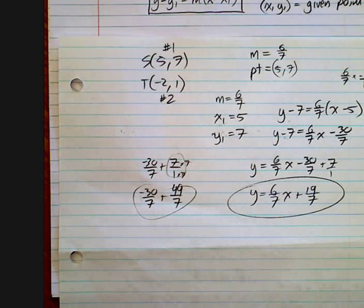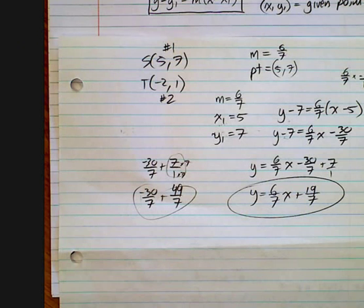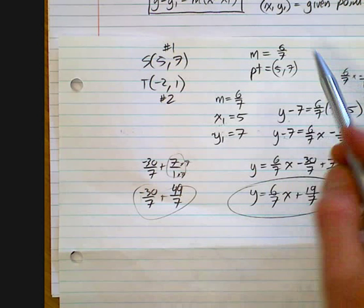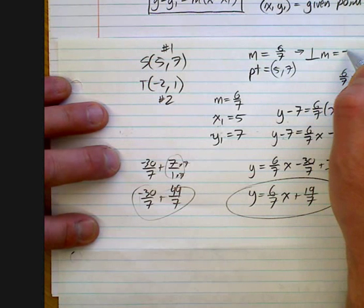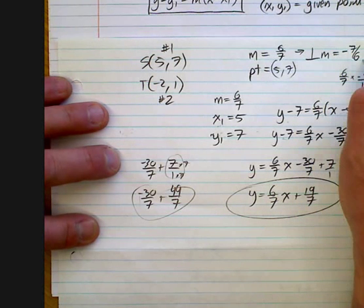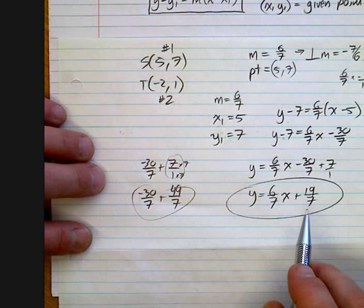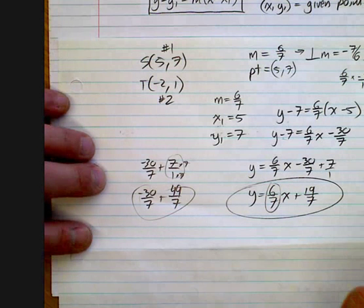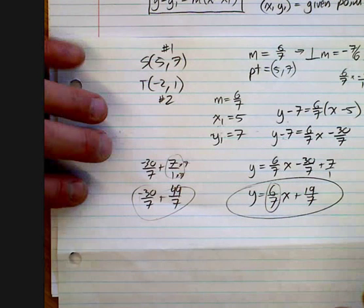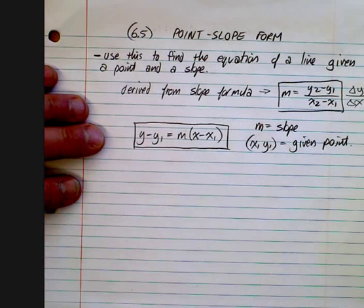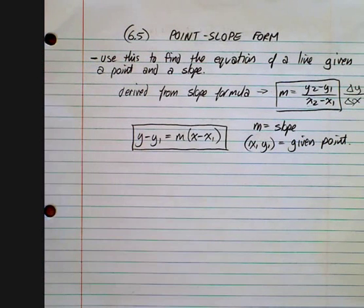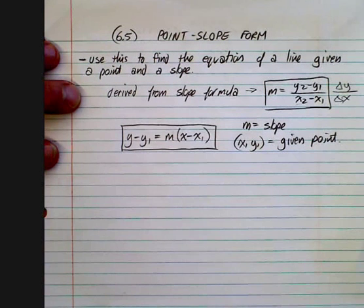Alrighty. Lots of different ways. We can't forget perpendicular lines and parallel lines. If I wanted a line perpendicular to this, I'd have to find a perpendicular slope, which would be negative 7 over 6. If I wanted a parallel line, I'd use the same slope that was already given. Lots of different questions we can ask. This is the basic notes. We'll work on as much as we can in class.